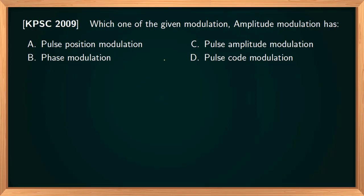Different pulse modulation schemes are given, and the question asks which employs amplitude modulation. Pulse amplitude modulation uses amplitude modulation of the pulse — the pulse amplitude is varied in proportion with the instantaneous amplitude of the message signal. In pulse position modulation, the position of the pulse is varied according to the message signal. PCM produces binary code words corresponding to analog information. So the correct option is pulse amplitude modulation.